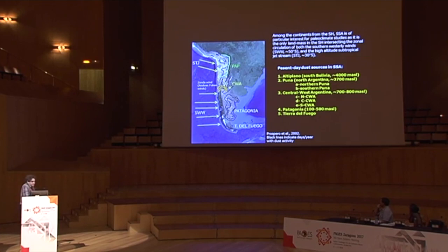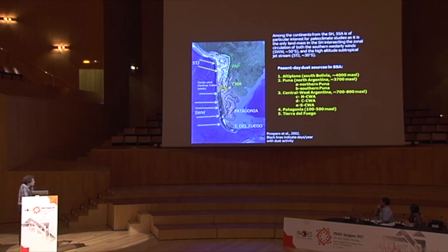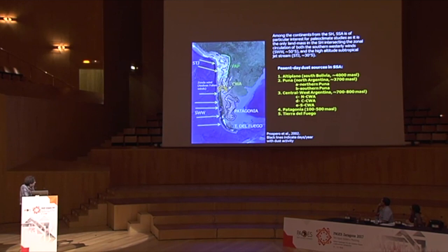According to Prospero, there are five different main potential source areas in Southern South America: the Southern Altiplano, the Puna region split into Northern and Southern Puna, Central West Argentina (Northern, Central, and South), Patagonia, and Tierra del Fuego. An important atmospheric circulation feature is the Andean foehn winds, locally called Sonda winds, that affect mainly the southern part of South America.